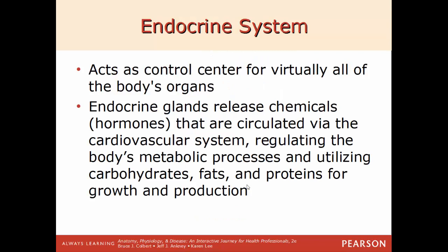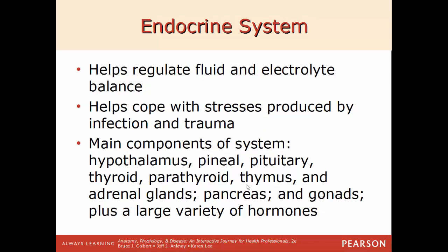The endocrine system, other than the nervous system, is the main control center of all body activity. Endocrine glands release chemical messengers called hormones that circulate throughout the body within the blood to control basically everything — all metabolic processes, how you break down fats, lipids, and proteins, how you grow, reproduce, and how tissue repairs itself. It also helps regulate fluid and electrolyte balance and helps you cope with stresses such as trauma or infections. Main components include the hypothalamus, pineal gland, pituitary gland (all in the brain), thyroid, parathyroid, thymus, adrenal glands, pancreas, and gonads.